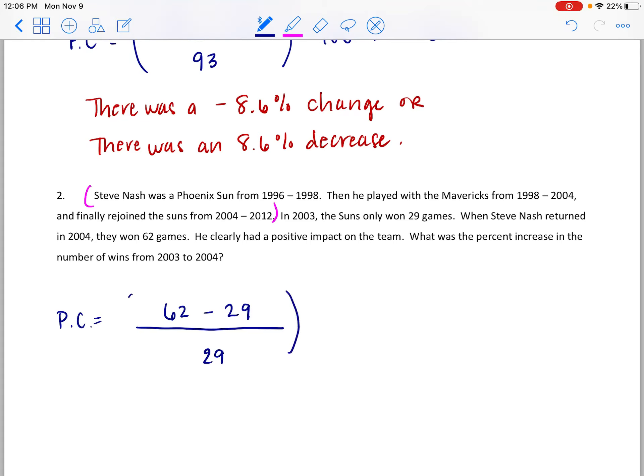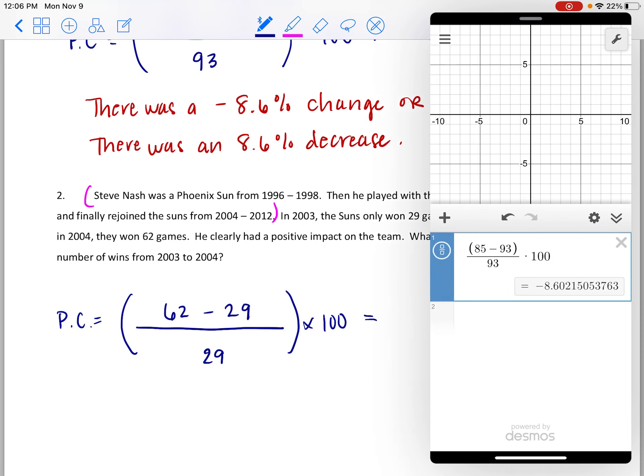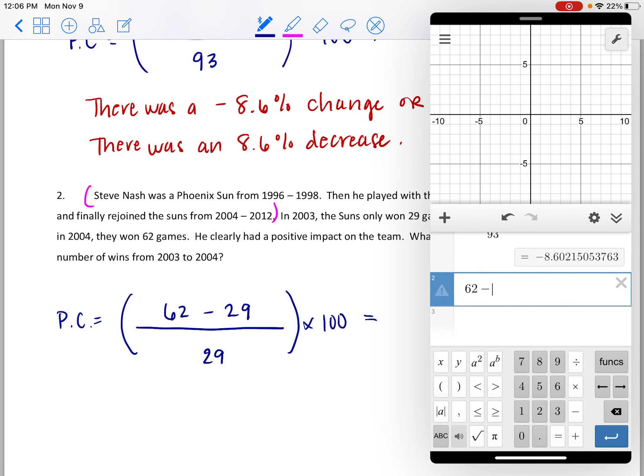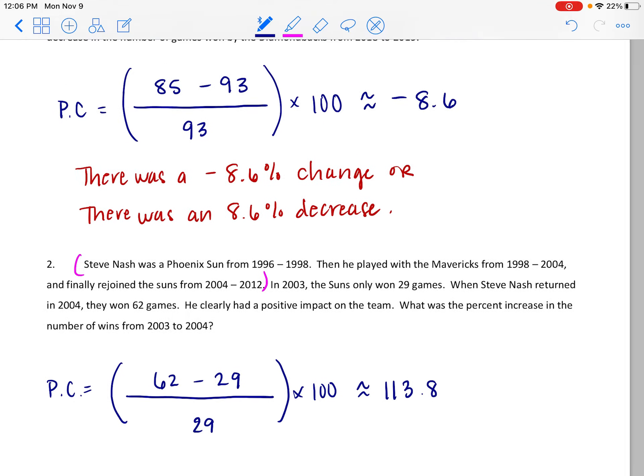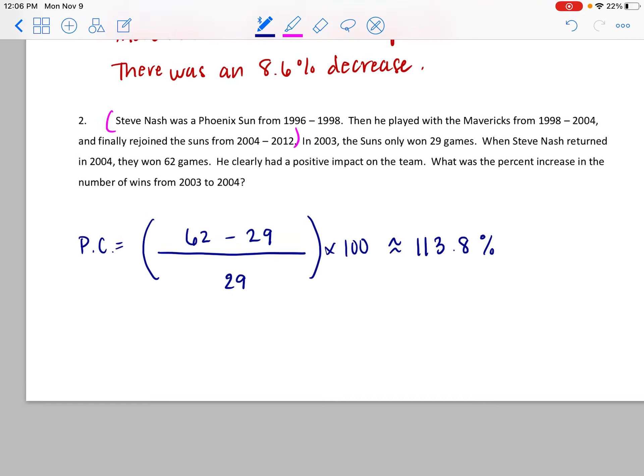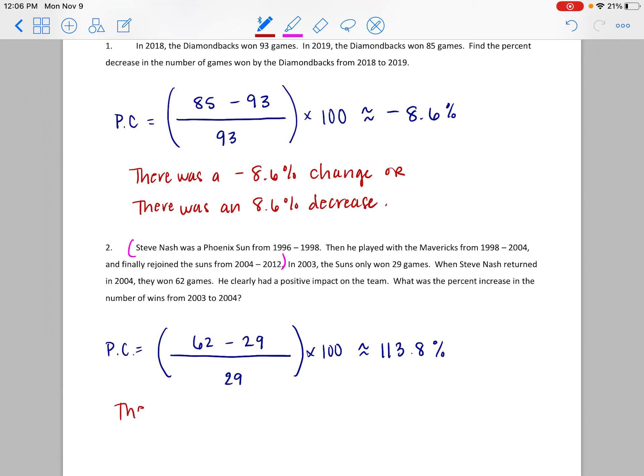This is going to be multiplied by 100. We have 62 minus 29, all divided by 29, multiplied by 100. And we end up with 113.8-ish percent. Again, we can answer this two ways. We could say there was a 113.8 percent change, or there was a 113.8 percent increase. Two positives don't cancel each other out, so either way is okay to keep both of those things in there.